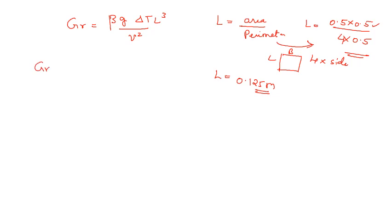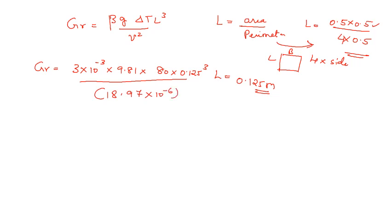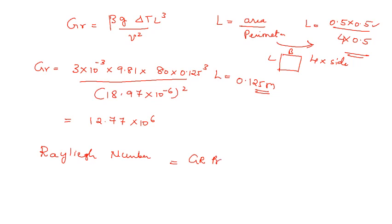The Grashof number is found using: Gr = (3 × 10⁻³ × 9.81 × 80 × 0.125³) / (18.97 × 10⁻⁶)², and that turns out to be 12.77 × 10⁶. The Rayleigh number is Gr × Pr = 12.77 × 10⁶ × 0.696 = 8.89 × 10⁶.